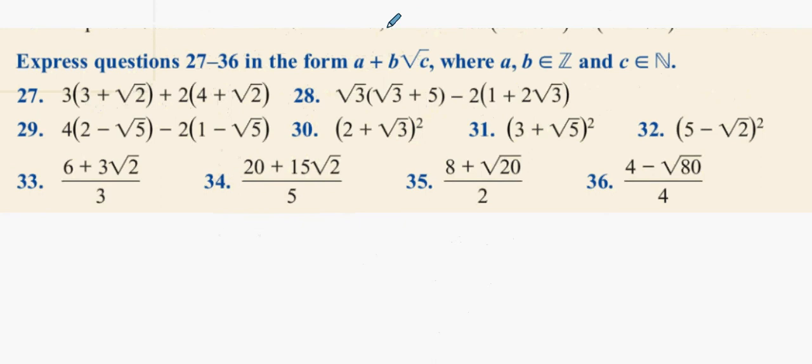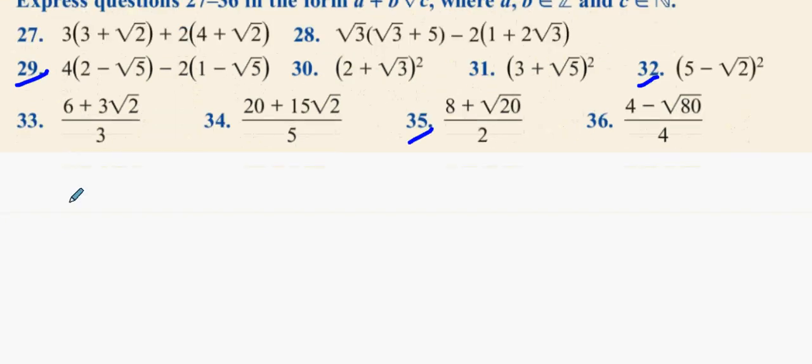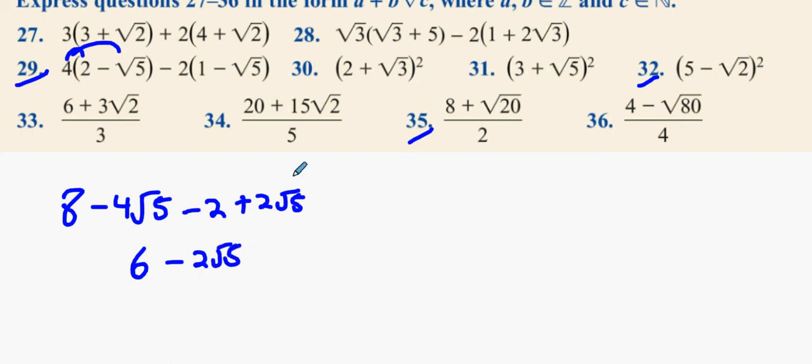Next thing, guys. I'm going to do question 29. I'm going to do 29, 32, and then I'll do 35. So, very easy stuff. So, I'm going to multiply this out. And what I'm going to get is 8 minus 4 root 5. Then I'm going to get minus 2. Minus 2 times minus root 5. Plus 2 root 5. 8 take away 2. 6 minus 4 root 5 plus 2 root 5. Minus 2 of them. Minus 4 plus minus 2 is minus 2. And that's your answer.